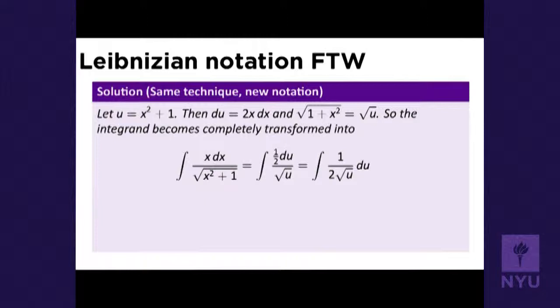The integral on the right is just a power function: 1/2 · u^(−1/2) du. To integrate a power function, add 1 to the power and divide by that power. Adding 1 to −1/2 gives 1/2; dividing by 1/2 gives 1. So the answer is u^(1/2). Once integrated, I have √u + C. But u was a construction — u was x² + 1 — so we substitute back: √u = √(1 + x²). The answer is √(1 + x²) + C.